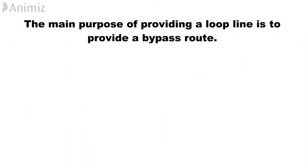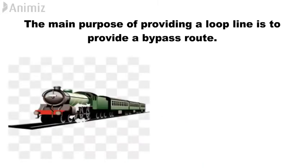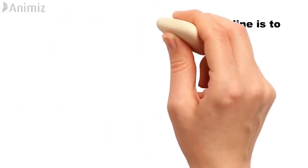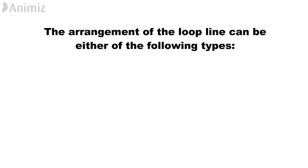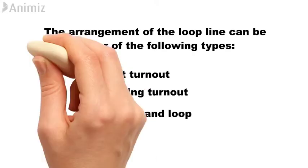The main purpose of providing a loop line is to provide a bypass route. The arrangement of the loop line can be either of the following types: split turnout, trailing turnout, straight and loop.